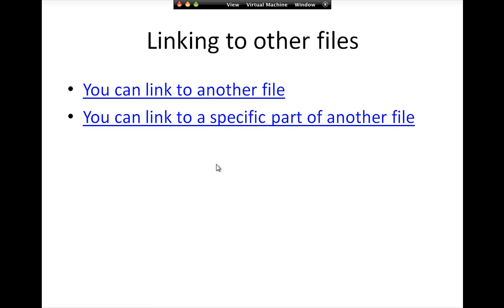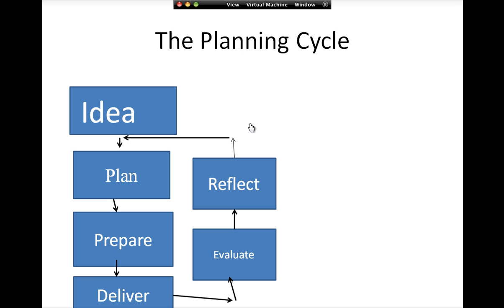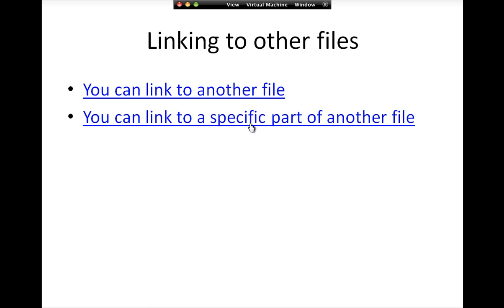But what a lot of people don't realize is, as well as linking to another file, you can actually link to a specific part of another file. So on this one here I've got a link to the fourth slide within that presentation. So I've predetermined where I want to go. And if I'm using a spreadsheet, I can choose to link to a specific sheet. Or if it's a Word document, I can point to a specific page or a specific heading within the document. And that's quite easy to do and it can be quite useful.